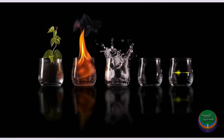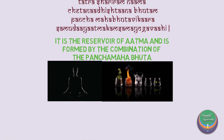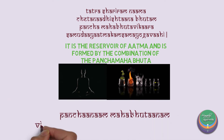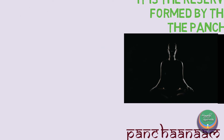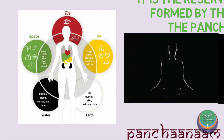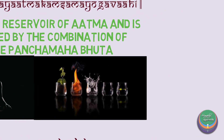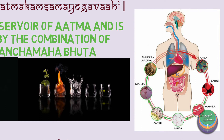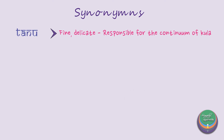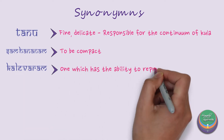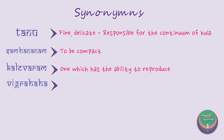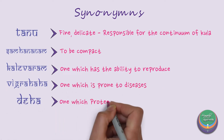To substantiate the above definition, let us look into the following sloka: Pancha nam Mahabhuta. This states that the variations of the quantity and quality of the Pancha Mahabhuta, called Pancha Mahabhuta Vikara, forms the Rasadi Dhatu.